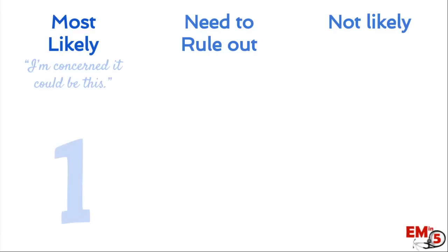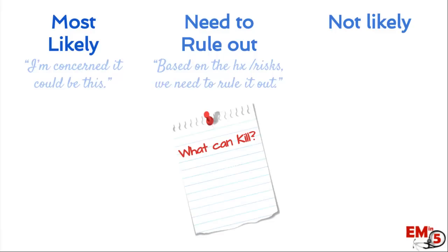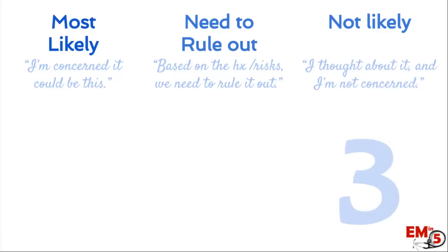Most likely is pretty self-explanatory — this is the diagnosis, or maybe a couple diagnoses, that you think the patient actually has and you're most concerned about. In the need to rule out category, these are things that, based on the history and physical, risk factors, and past medical history, we really need to rule out. These are things that could cause significant harm to the patient if we miss them, and they address the items on your 'what can kill' list.